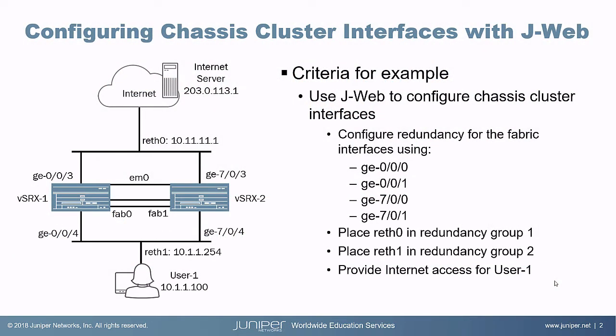Here is our example topology. We have vSRX1 and vSRX2 which are part of the chassis cluster — those are the two nodes. vSRX1 is node 0, vSRX2 is node 1. The two nodes are connected through the em0 interface, which is the control port. We will need to configure the fab0 and fab1 interfaces. ge-0/0/4 and ge-7/0/4 will be child interfaces for reth1, and ge-0/0/3 and ge-7/0/3 are child interfaces for reth0, which connects the vSRX devices to the internet.